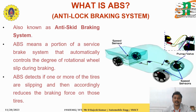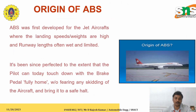The ABS system has sensors mounted on the wheels that detect the position of the wheel — whether it is rotating or stationary. When wheel lock is detected, the sensor sends a signal to the ECU.